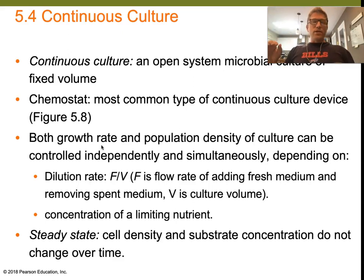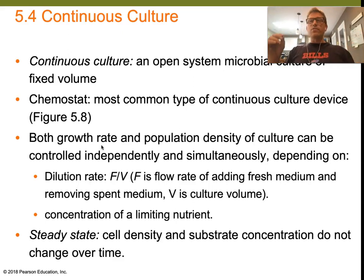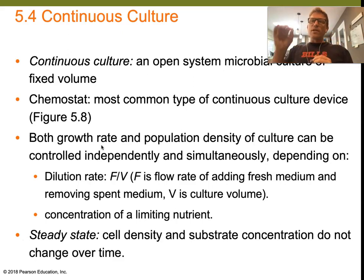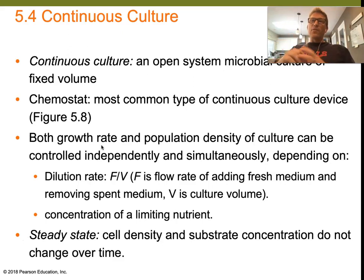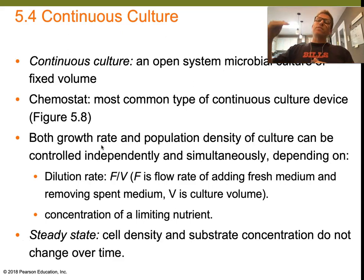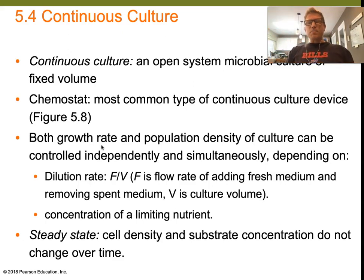Let's say our limiting nutrient is our carbon source — maybe it's glucose. If we want our cell density to be very, very low, we can provide them with very little glucose along the way. If we want a really high, dense culture, we can provide them with a lot of glucose, if in fact that's the limiting nutrient for their growth.